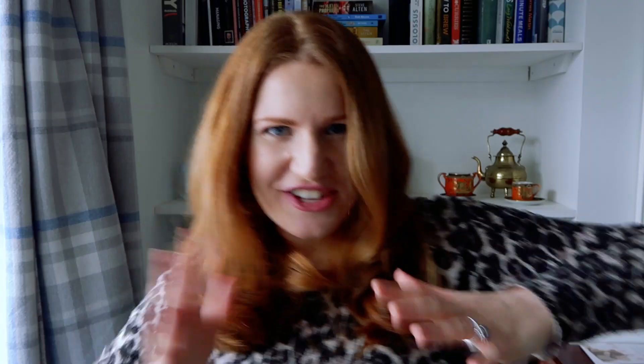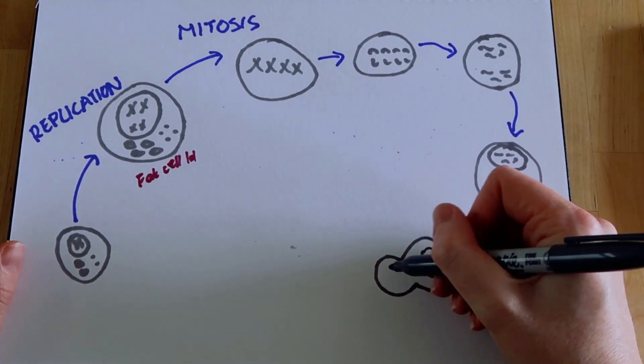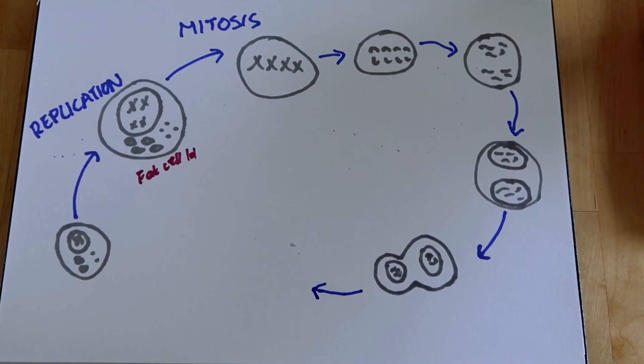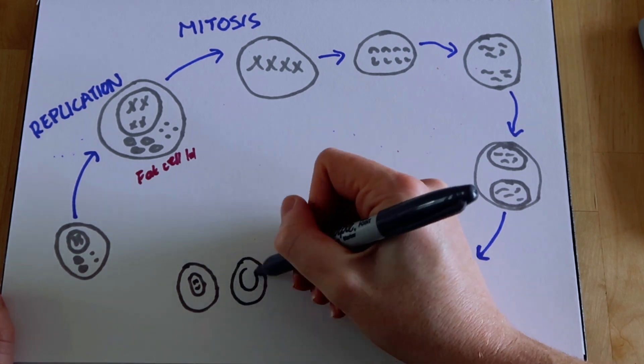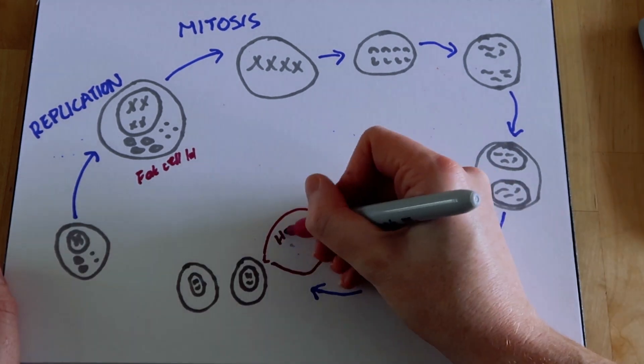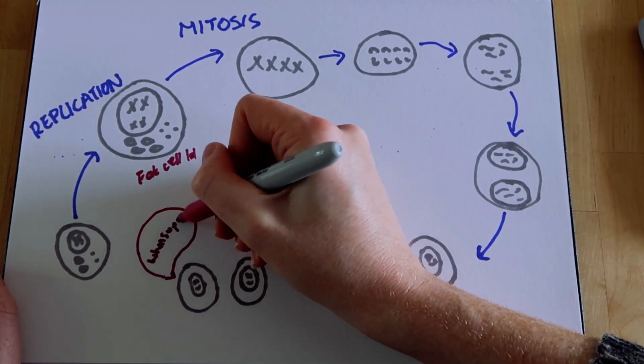The third stage is division. This is the final stage where the cytoplasm and the cell membranes divide to form two identical cells.